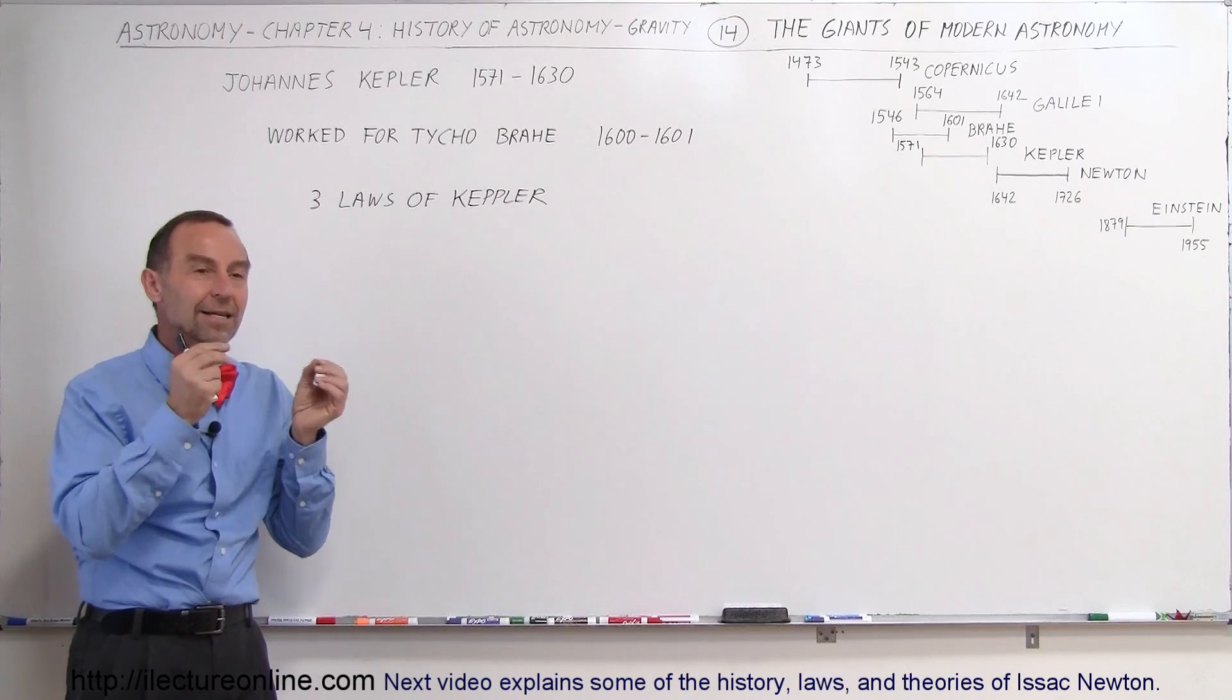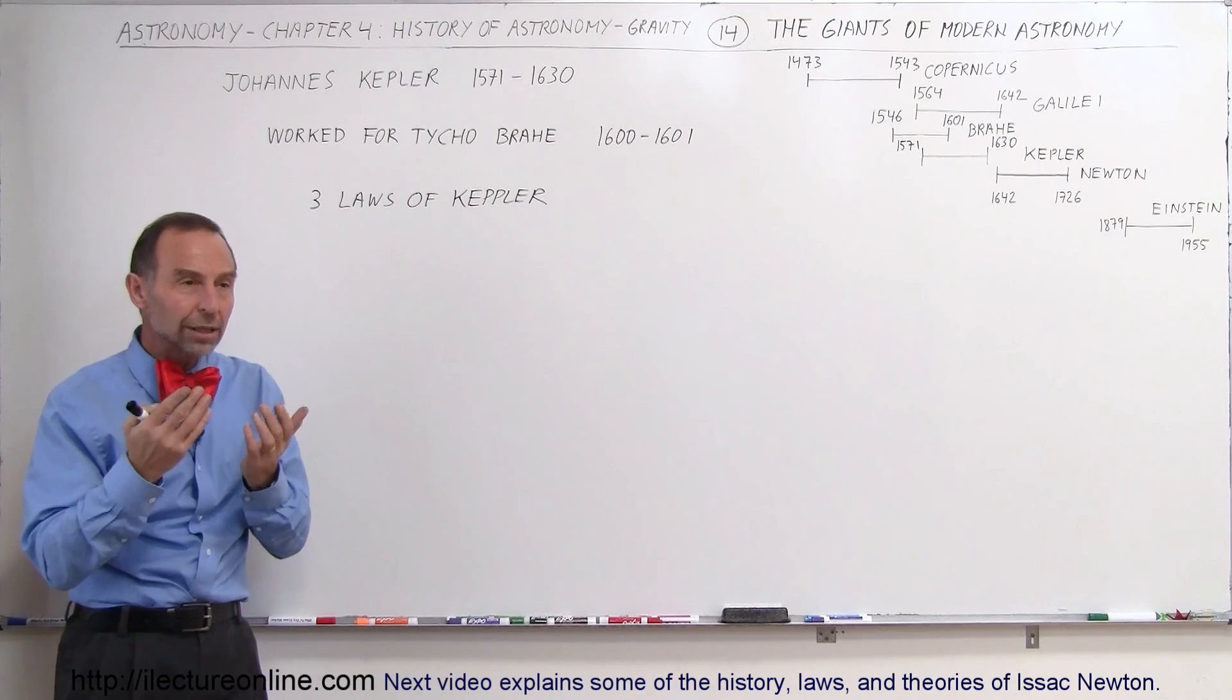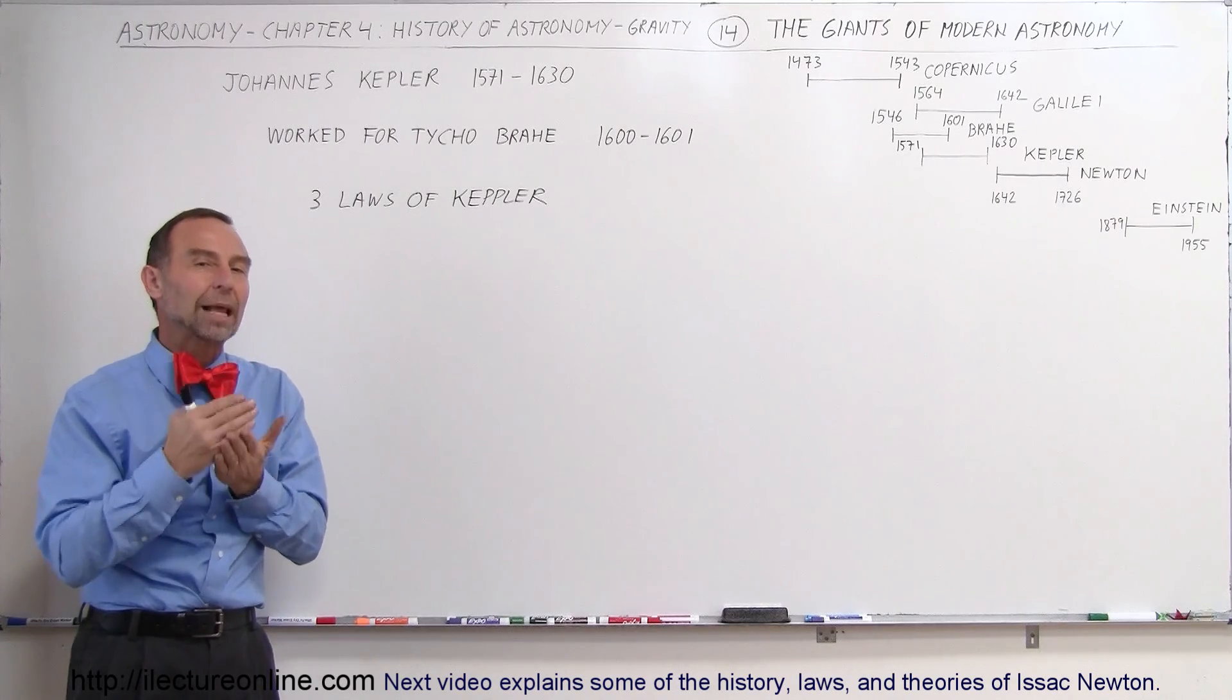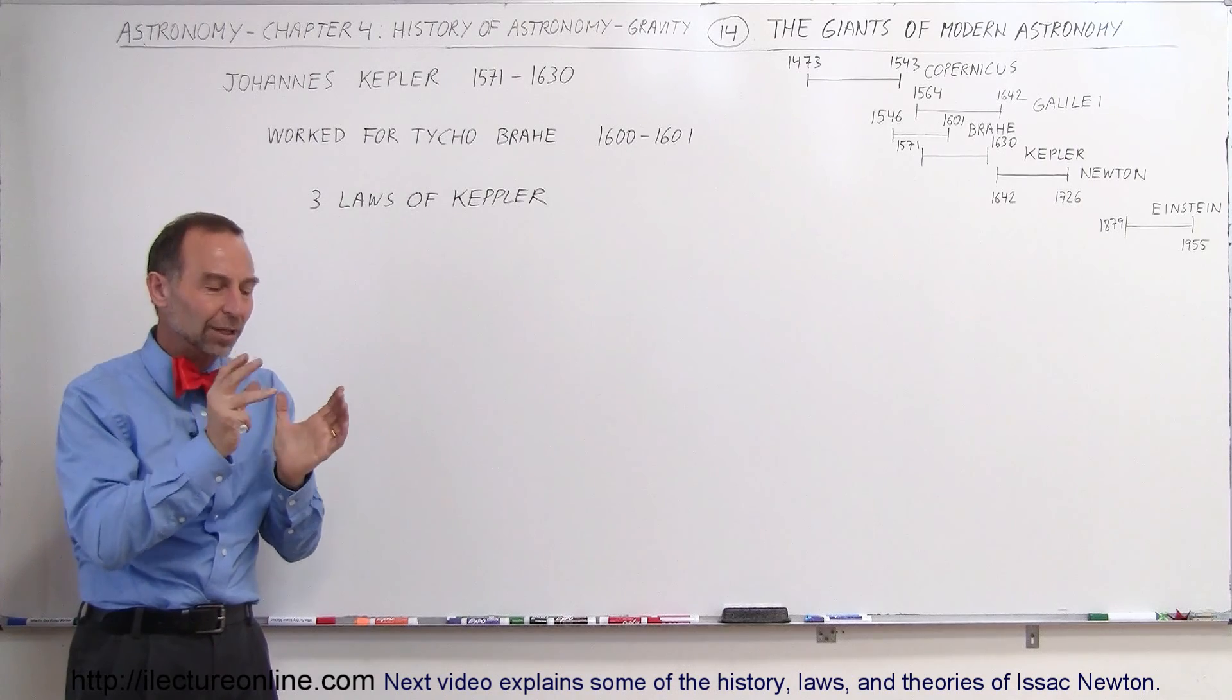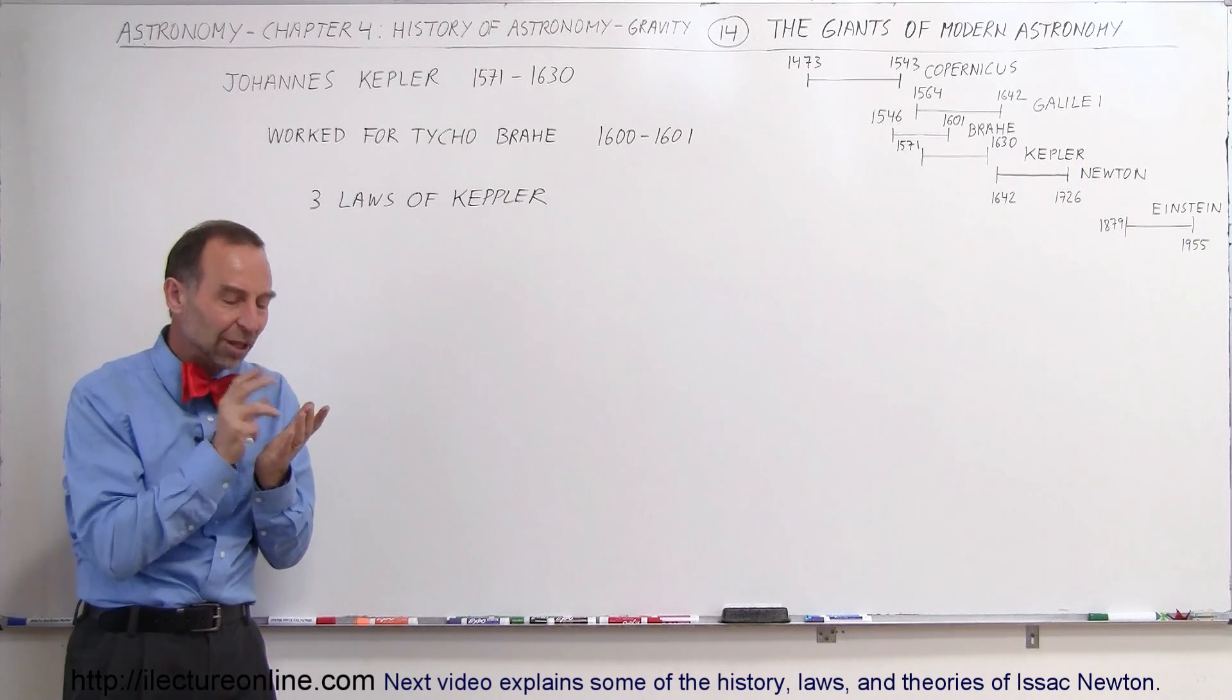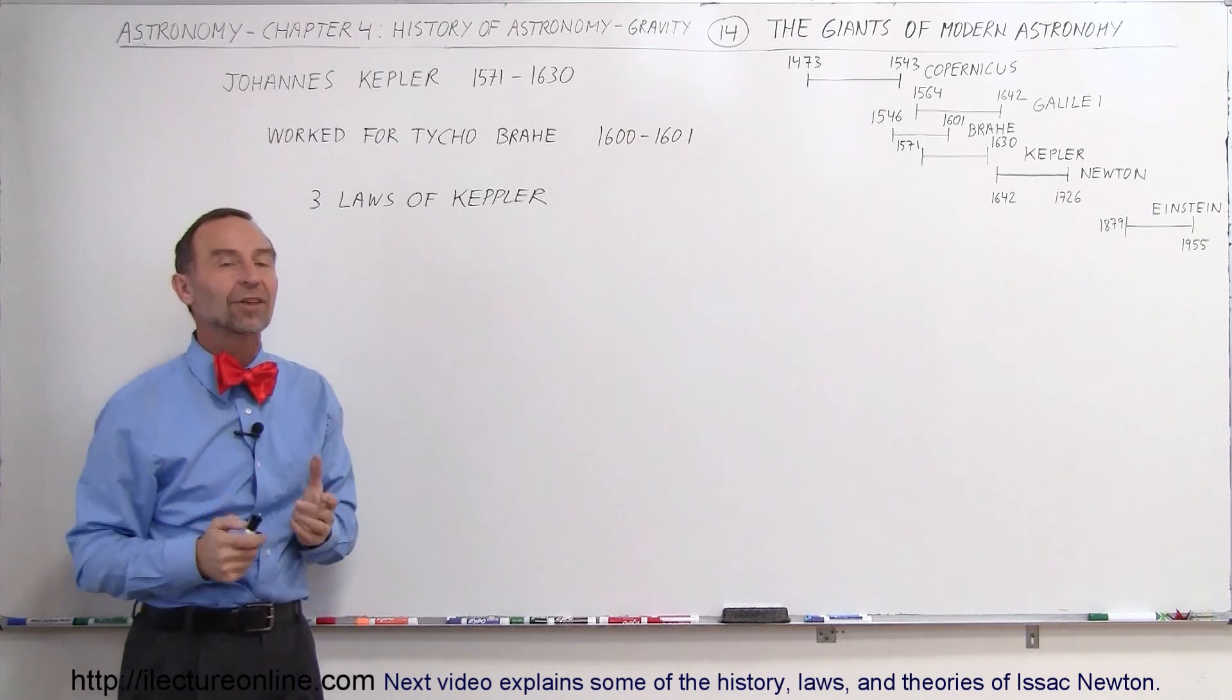He realized that the idea that everything moved in circular motion around the Sun was wrong and actually the motion of the planets around the Sun were elliptical orbits. And once he started realizing that, the information in the data that Tycho had collected for all those years began to make sense.